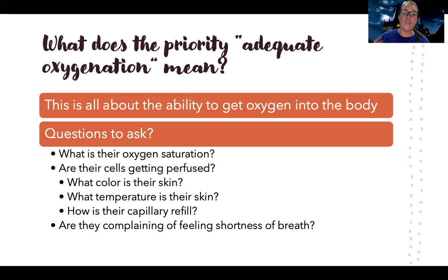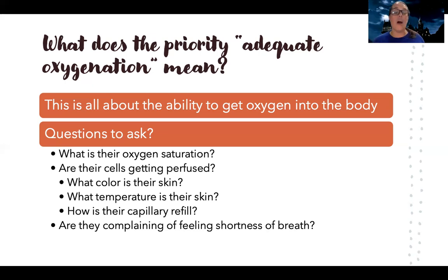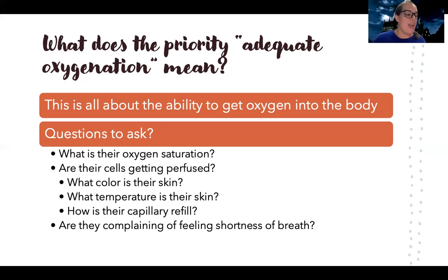Even if the oxygen saturation looks good, how's their perfusion? What do their fingertips look like? What temperature are they? What color? What's the capillary refill? These are all signs of whether oxygen is actually getting to the tissues. The goal isn't just to get oxygen into the lungs — it's to get it to the tissues. If oxygen is limited, it goes to major organs first.